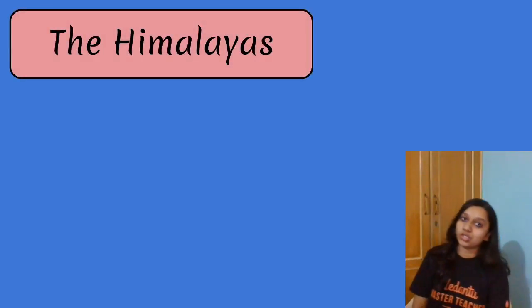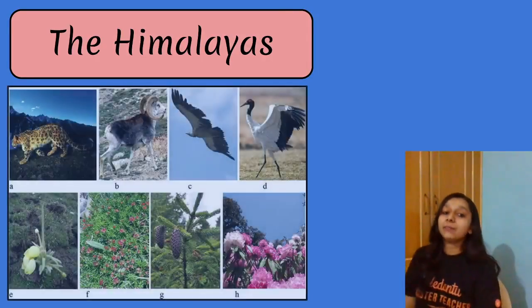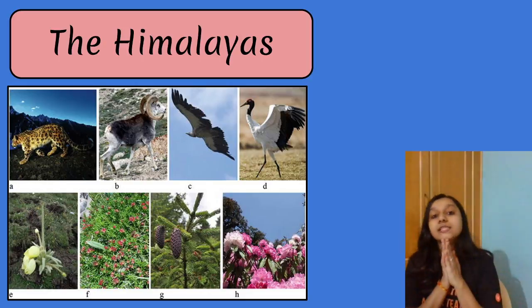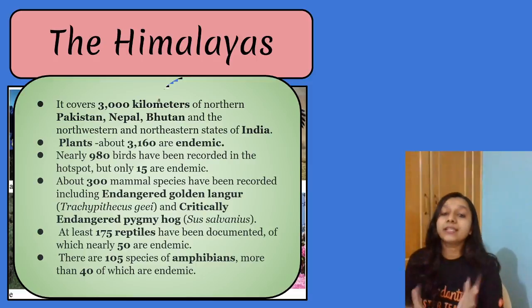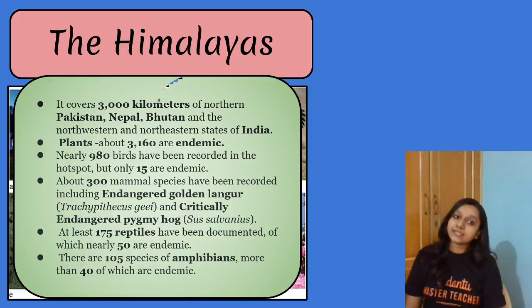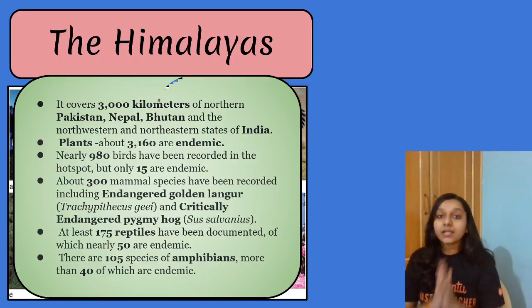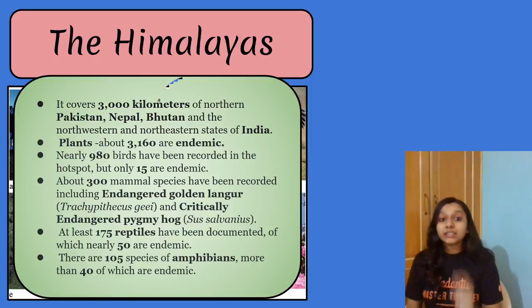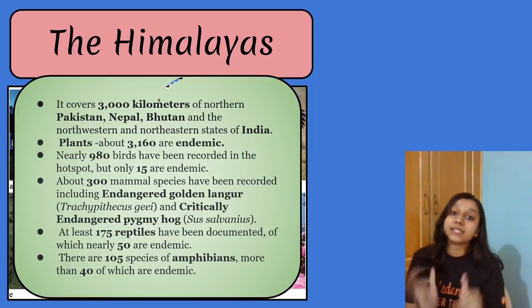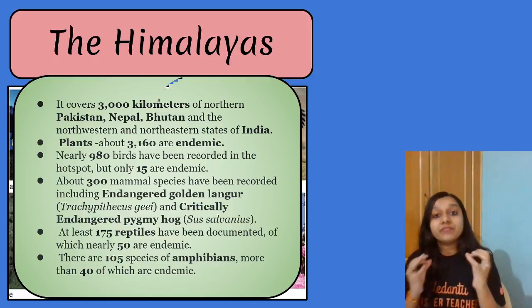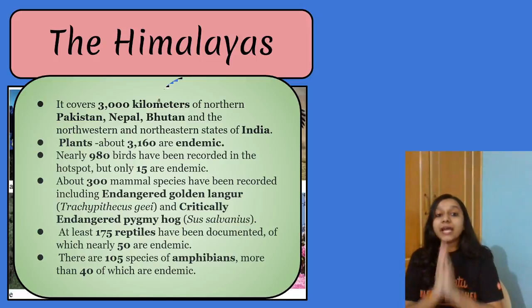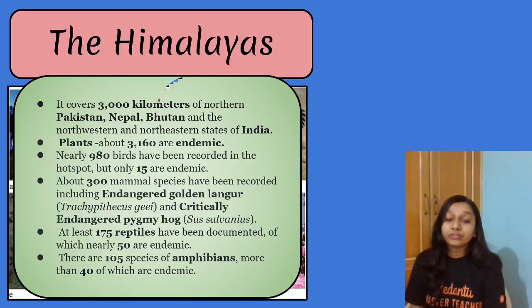In India there are 3 biodiversity hotspots. The first Biodiversity Hotspot is the Himalayan region, which has different types of plants and animals. The Himalayan Biodiversity Hotspot spans more than 3,000 km and covers India's North Western and North Eastern states. There are 3,160 endemic plant species — plants found only in India and nowhere else. There are 980 species of birds recorded, of which 15 are endemic.